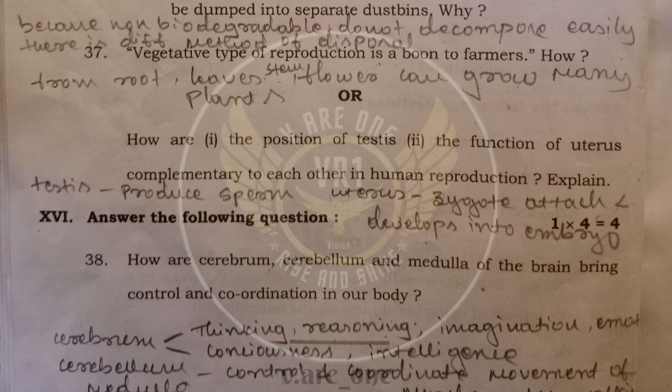How are the position of testis and function of the uterus complementary to each other in human reproduction system? Testis helps to produce the sperms. And uterus helps to implantation of the zygote. And zygote, after dividing, it develops into embryo. So uterus provides the place for it.